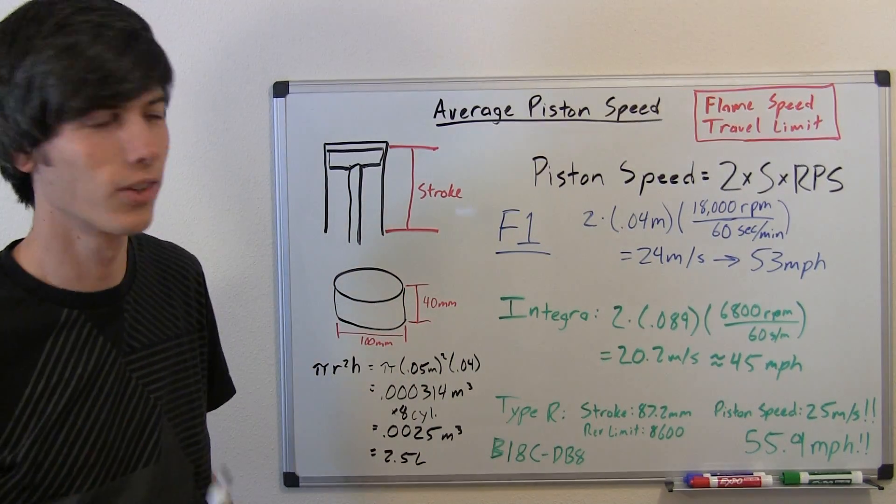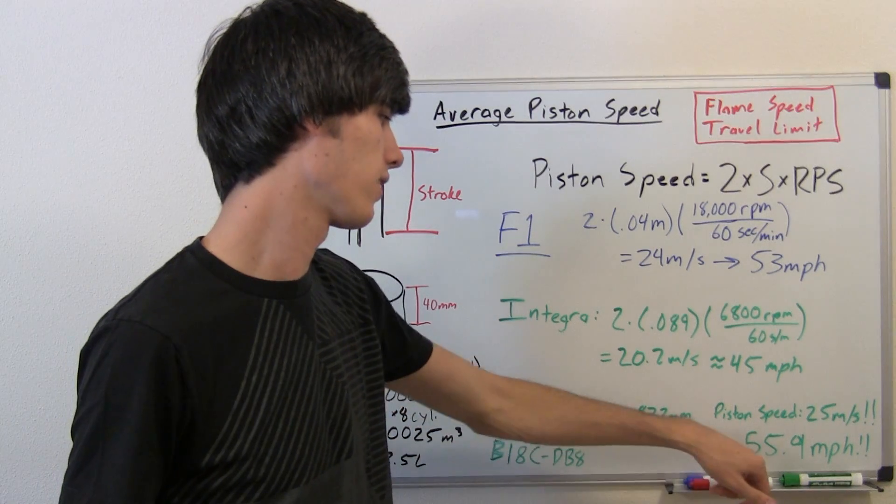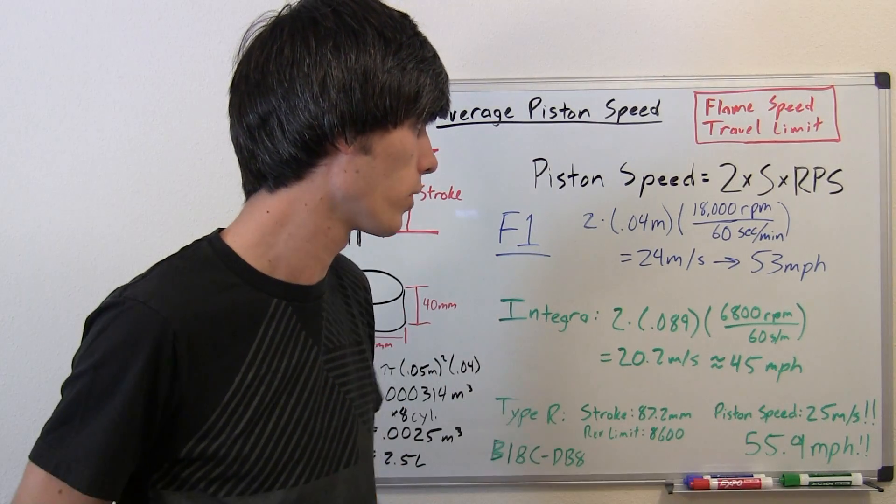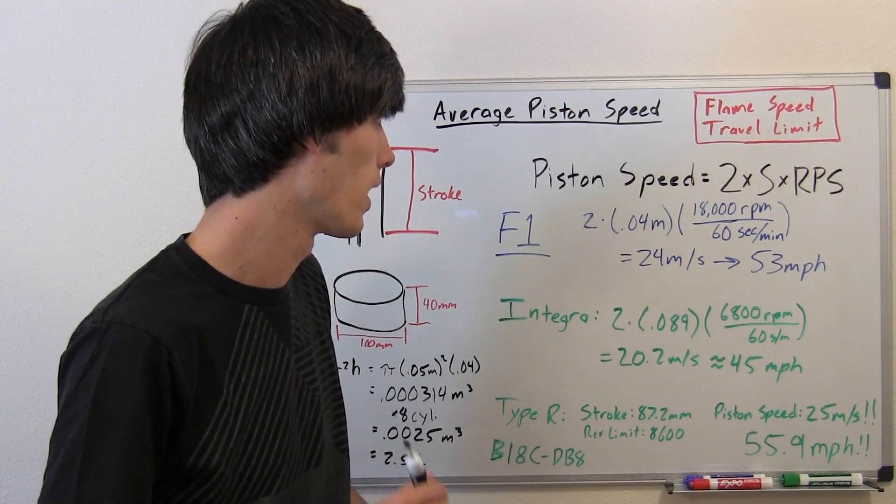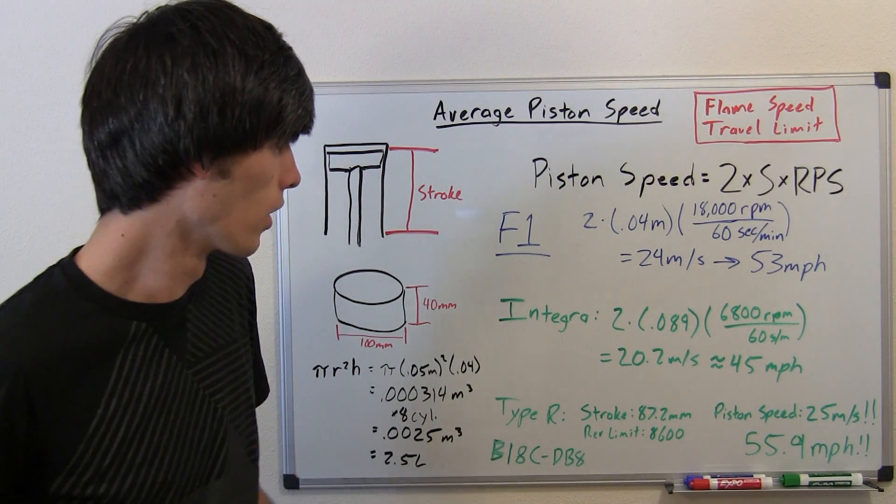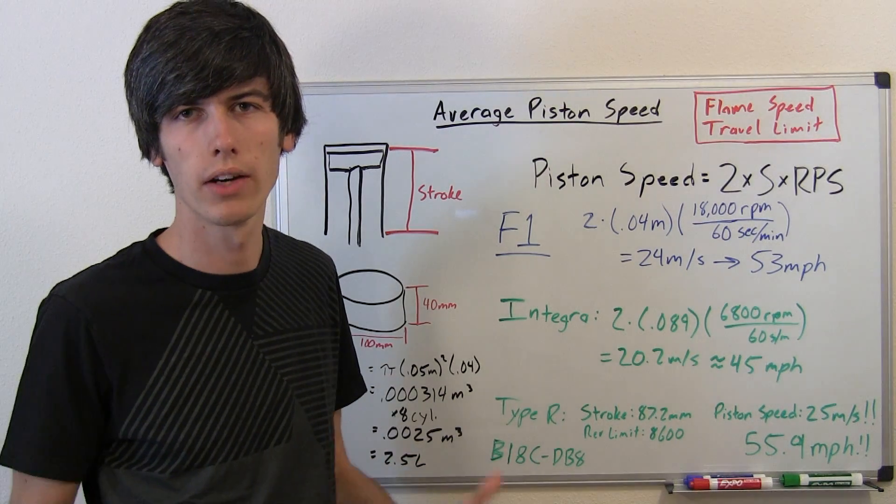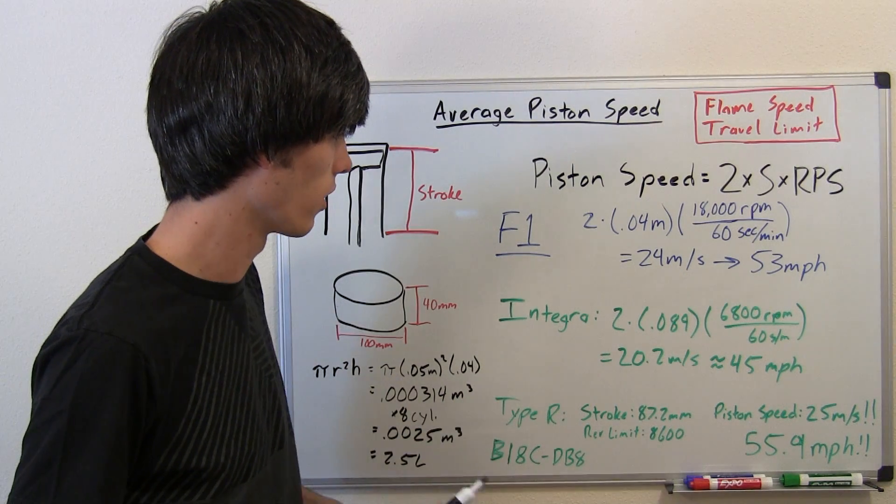Yes, faster than a Formula One car. In fact, if you convert that over, 55.9 miles per hour. Another 2.9 miles per hour faster average piston speed than a Formula One car. So, a Type R is pretty much the greatest car in the world. That's what we have discovered here.